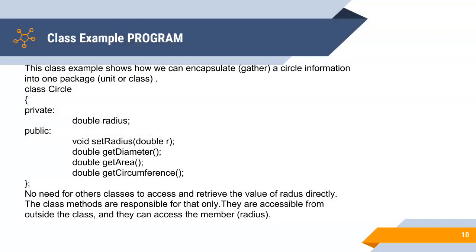Class example program. This class example shows how we can encapsulate or gather information for a circle into a single unit named as the circle class. Here we declared the radius member with the double data type in private section and four methods like set radius to set the value of this radius.